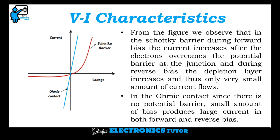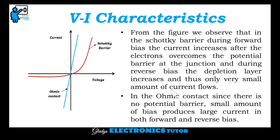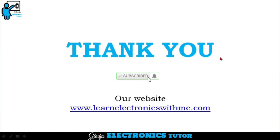This is the V-A characteristics. In the Schottky barrier, during forward bias the current increases after electrons overcome the potential barrier at the junction, and during reverse bias the depletion layer increases so only a very small amount of current flows. In ohmic contact, since there is no potential barrier, a small amount of bias produces large current both in forward and reverse bias. Thank you for watching. If you like the video, please like, share, and subscribe.